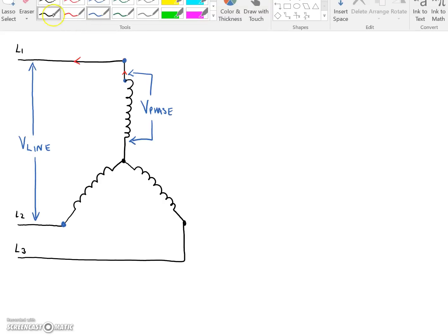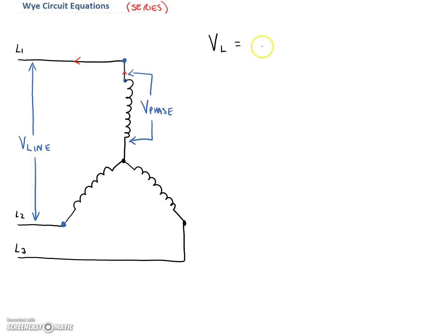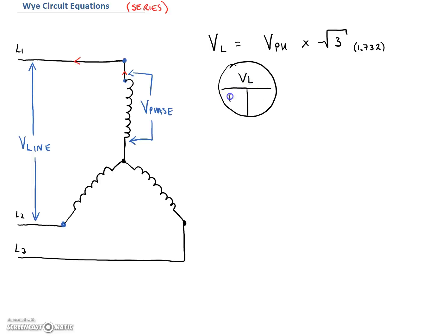So there's no way that this line voltage can be the exact same as that phase voltage. The relationship in a Y circuit is that the line voltage is equal to the phase voltage multiplied by root 3, and root 3 is essentially 1.732. If we want to simplify that in an Ohm's law chart, we put V_line on top, then V_phase multiplied by root 3. We can find our phase voltage by taking our line voltage and dividing it by root 3. So this line voltage is always greater than the phase voltage by a factor of root 3.